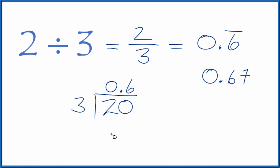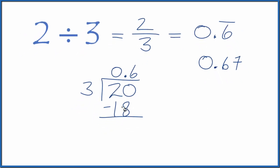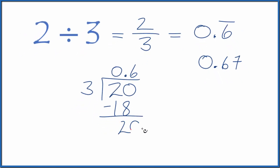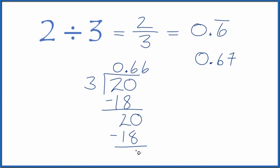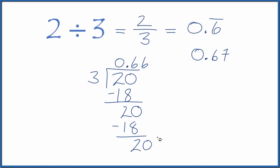So six times three is 18, and when you subtract, you're left with two. So we'll call this 20 and move over one, and six times three is 18, and you're left with two. We could call it 20, and so on.